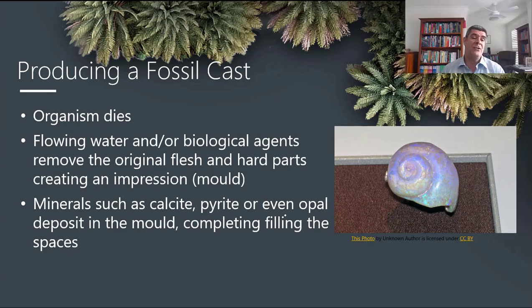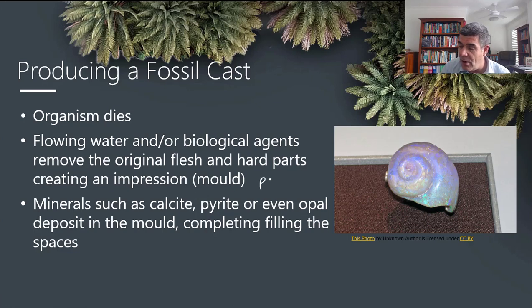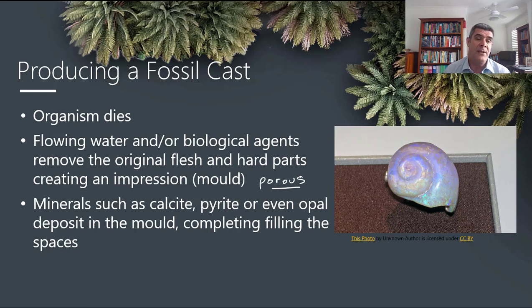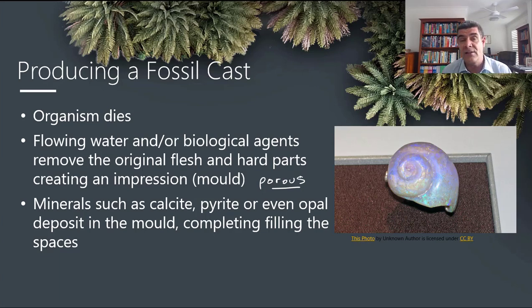Flowing water and biological agents are important to remove the original flesh and hard parts, which is what creates the impression. This is one of the reasons we talked about the importance of the substrate being porous — allowing water to pass through and carry the important minerals that are deposited to create these types of casts.